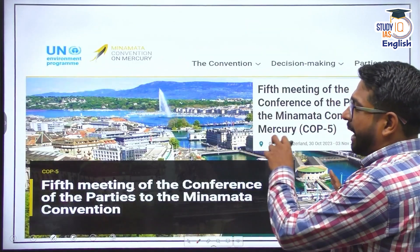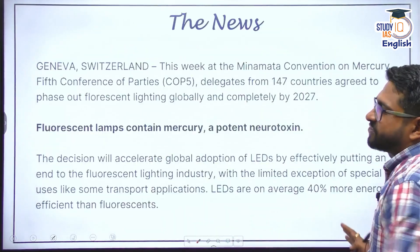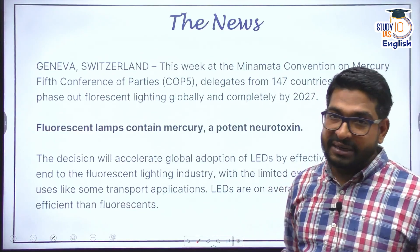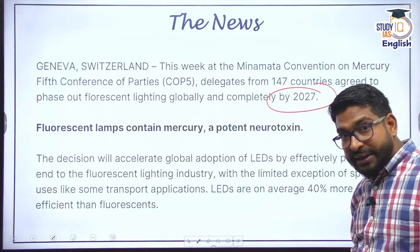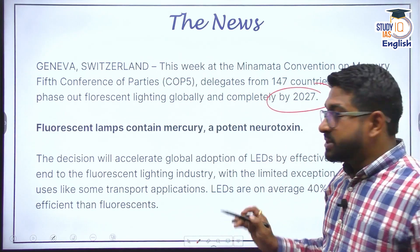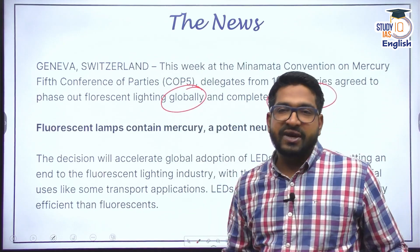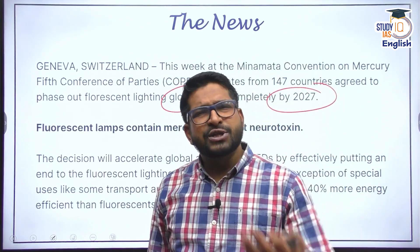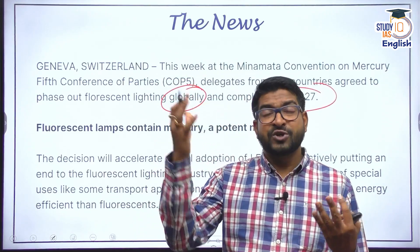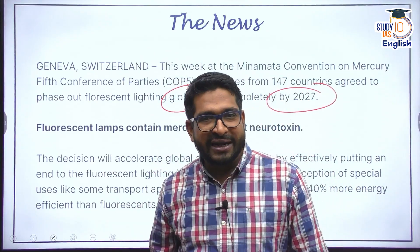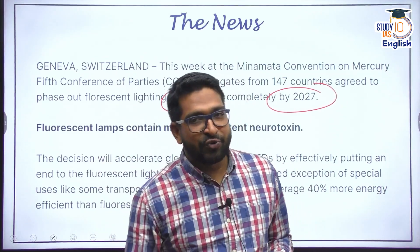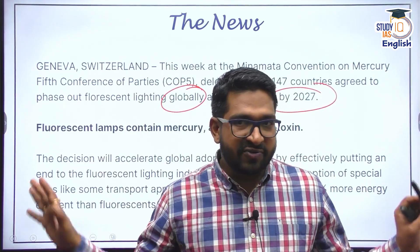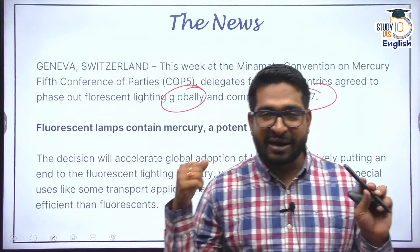In the fifth conference of parties, the first key decision is that CFLs would be completely phased out globally by 2027. A more stringent target of 2025 has also been suggested. CFLs consume more electricity and we now have efficient LED lighting, so the direction is clear — by 2027, you might not find CFLs in the market at all.